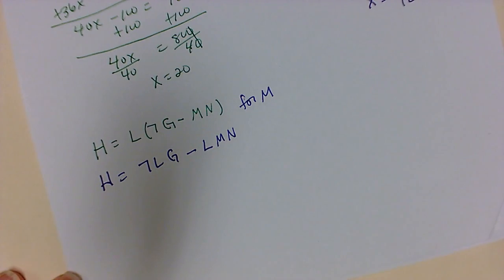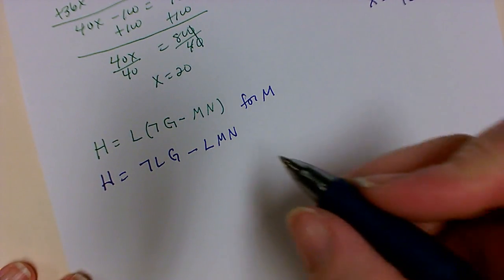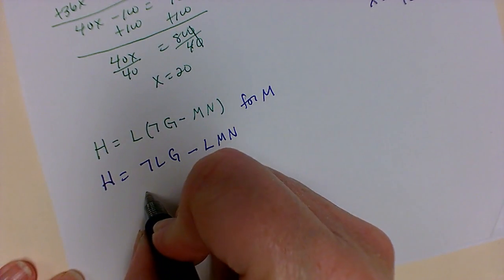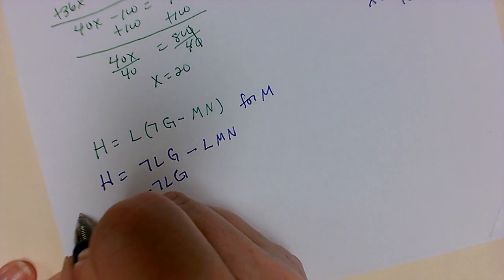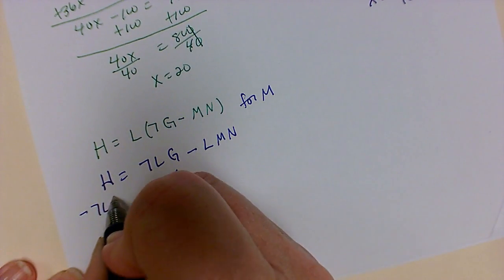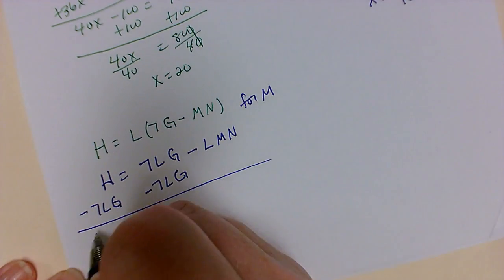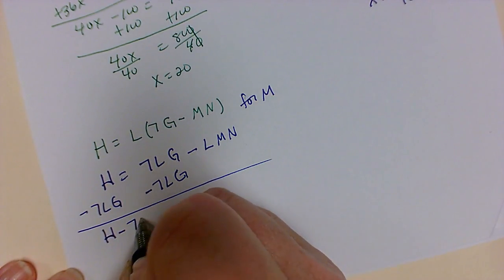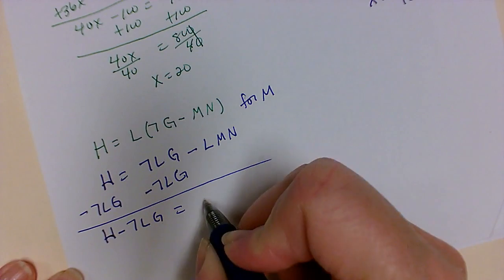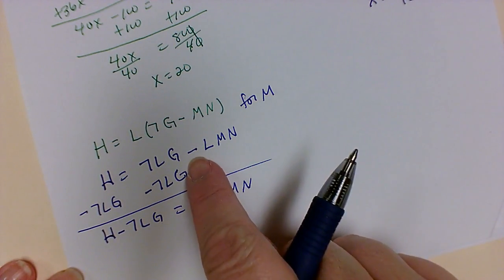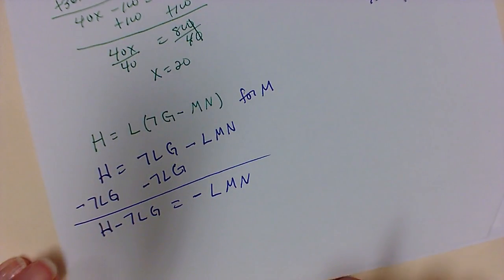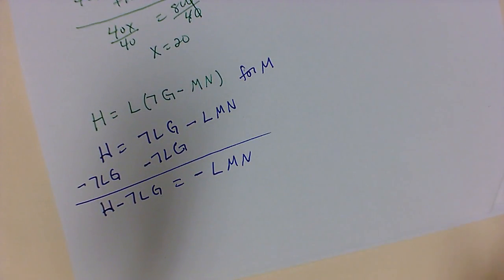So now remember, I have to solve for this letter. So I want to solve for this term first by moving this away. And then divide by anything that's being multiplied on it. So I'm going to subtract my 7lg because it's opposite of what's happening. So minus 7lg. So now I have h minus 7lg is equal to negative lmn. Don't forget that negative sign that's sitting there.